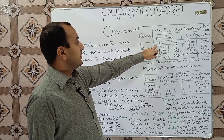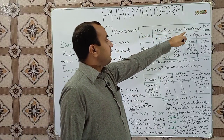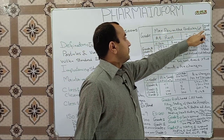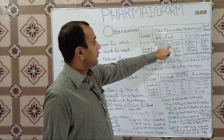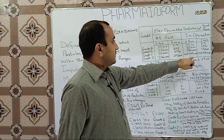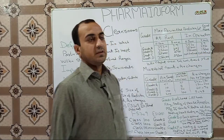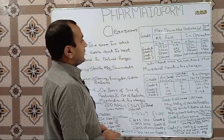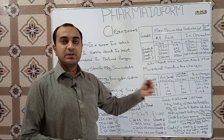Let's start with non-viable particle count. In non-viable particle count, we take 0.5 micron particles and 5 micron particles. We look at maximum permitted particles per cubic meter — equal or above 0.5 micron, and equal or above 5 micron.